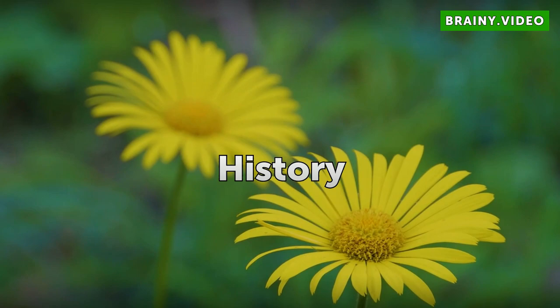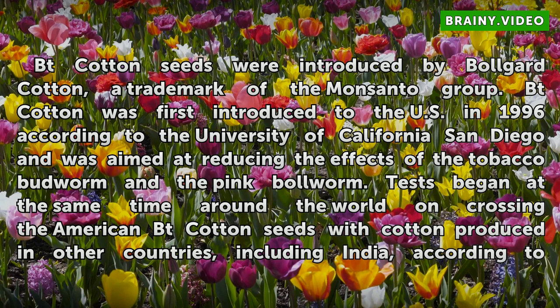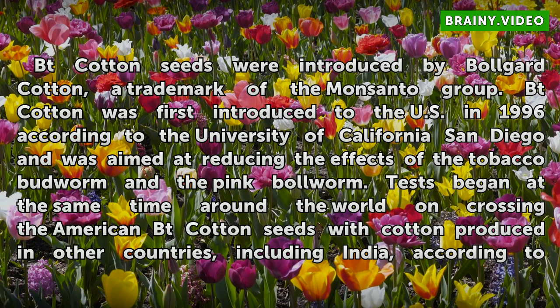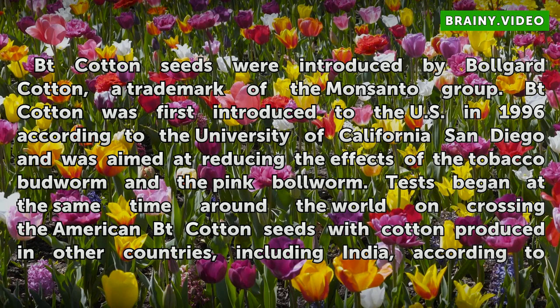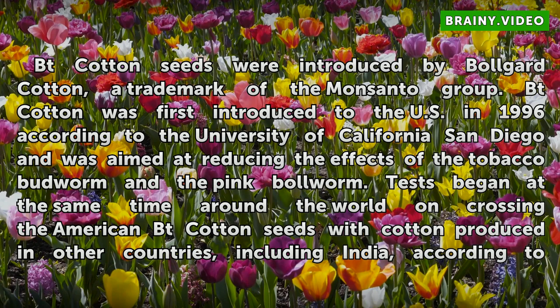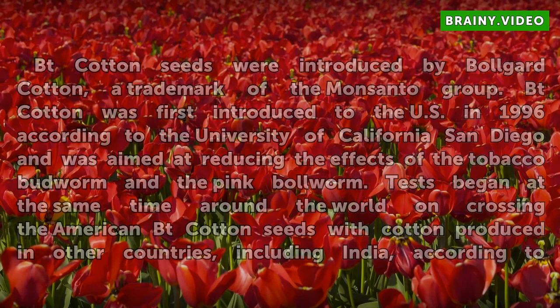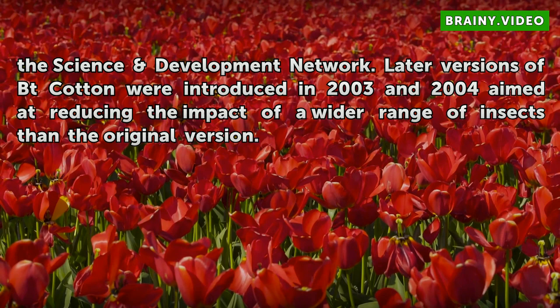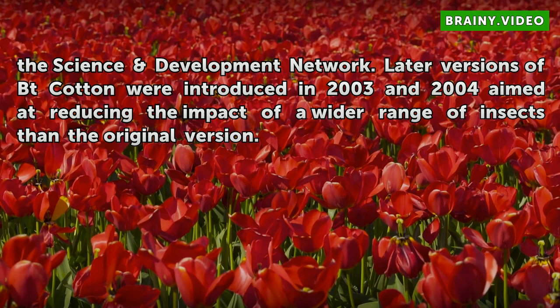History. Bt cotton seeds were introduced by Bollgard Cotton, a trademark of the Monsanto Group. Bt cotton was first introduced to the U.S. in 1996 according to the University of California San Diego, and was aimed at reducing the effects of the tobacco budworm and the pink bollworm. Tests began at the same time around the world on crossing the American Bt cotton seeds with cotton produced in other countries, including India, according to the Science Development Network. Later versions of Bt cotton were introduced in 2003 and 2004, aimed at reducing the impact of a wider range of insects than the original version.